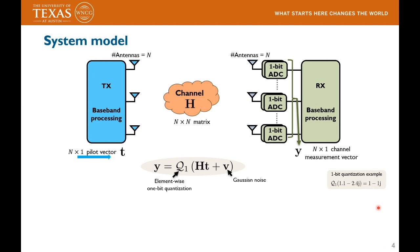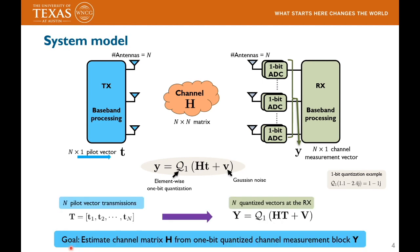Note that this 1-bit quantization operation is performed element-wise on the vector Ht. An example of this quantization is shown here. Now consider a setting where the transmitter sends out pilot vectors t1, t2, and so on up to tN in sequence. For such a transmission, we can define a training block given by capital T. When the transmitter sends out this training block, the receiver acquires a measurement block Y, expressed as a 1-bit quantized version of H times capital T plus V, where V is a Gaussian noise matrix. The goal of our paper is to estimate the channel matrix H from these 1-bit quantized measurements in the block Y.